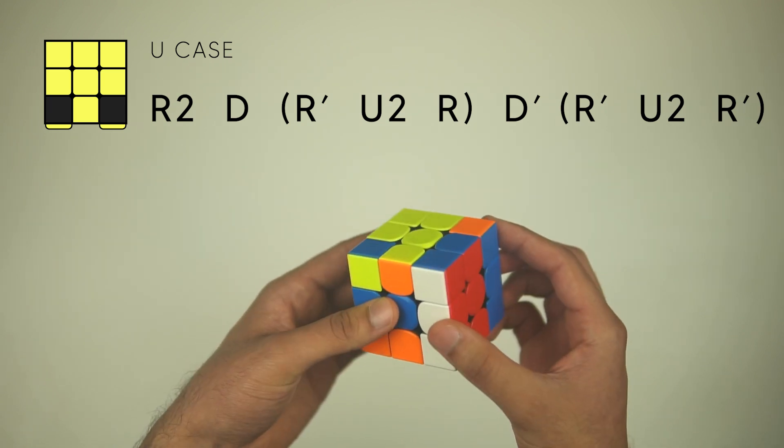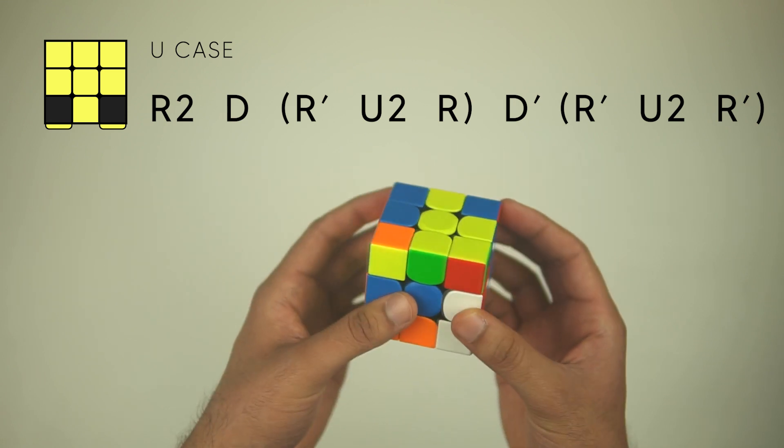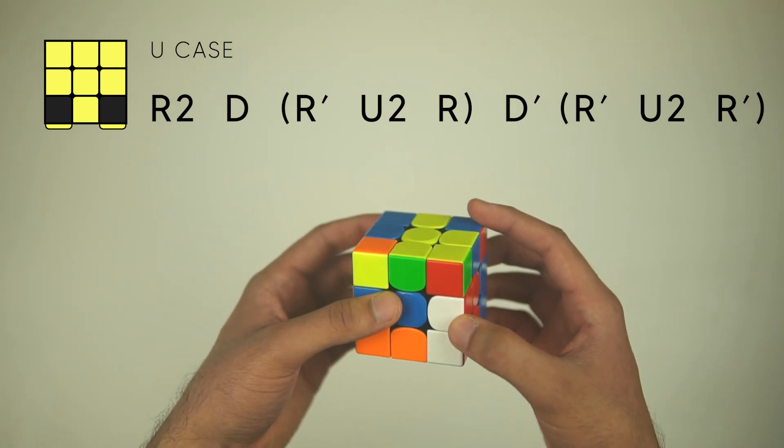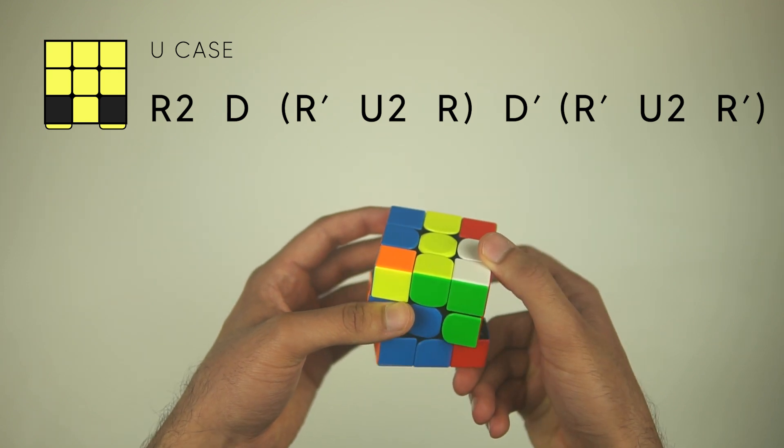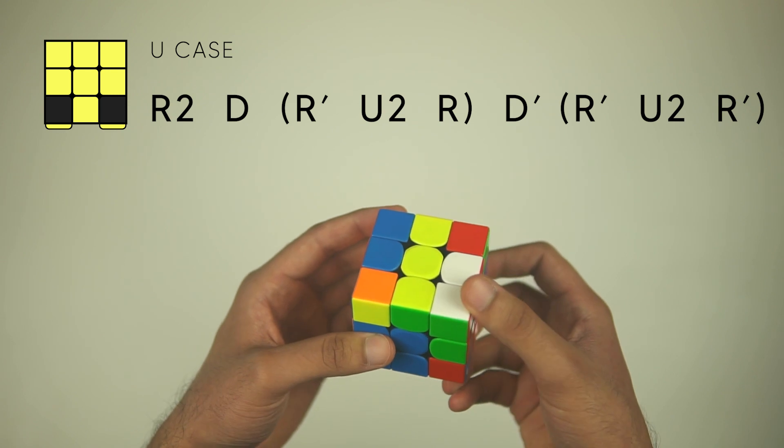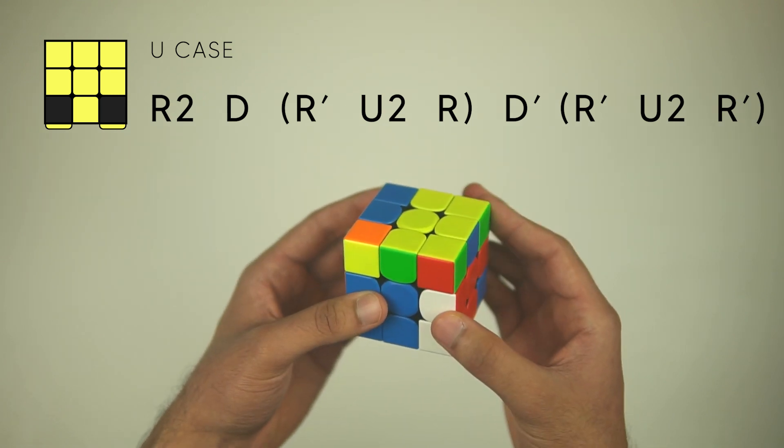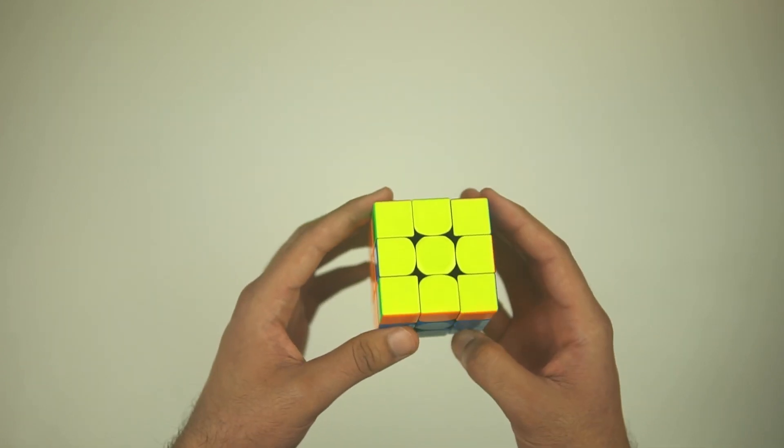R', and a U2 to move this F2L pair here to the back left, and then an R, D' to undo that original D we did and connect all of this up, R', U2 to connect the F2L pair, and an R' to put everything back down.